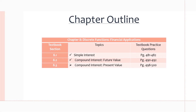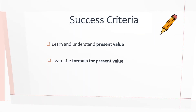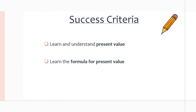Here's the chapter outline once again, and we're working with present value. You can find extra practice questions on this topic on pages 498 to 500. There are only a couple of points in our success criteria this time — we just want to learn and understand present value and what it is, and also learn the formula for present value and how to apply it.